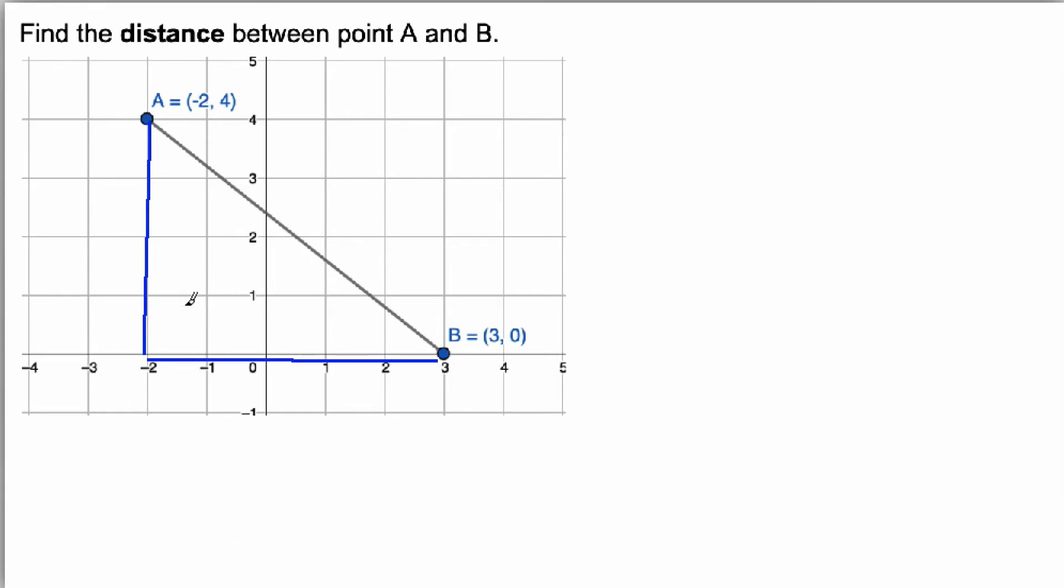That means I have a triangle with a right angle, and I can label this side A, this side B, and then this side is the longest side. It's called the hypotenuse.